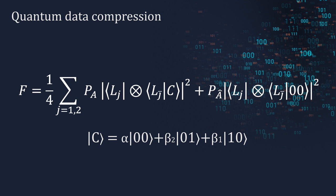Where P_A and P_A-hat are the probabilities of the two-qubit system to lie in the typical subspace and its complementary, respectively.